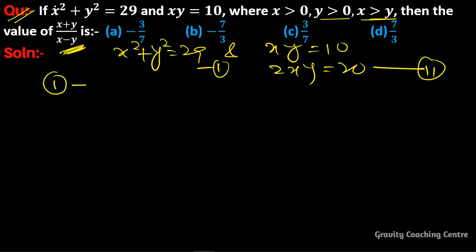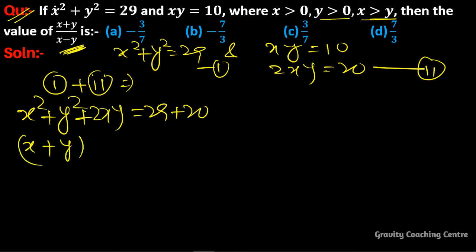Now adding first and second, we get x² + y² + 2xy = 29 + 20. So (x + y)² = 49 = 7². Therefore, x + y = 7.